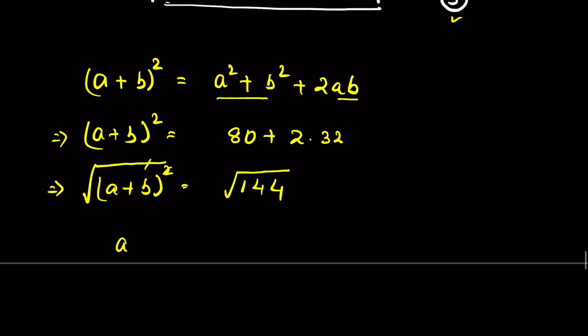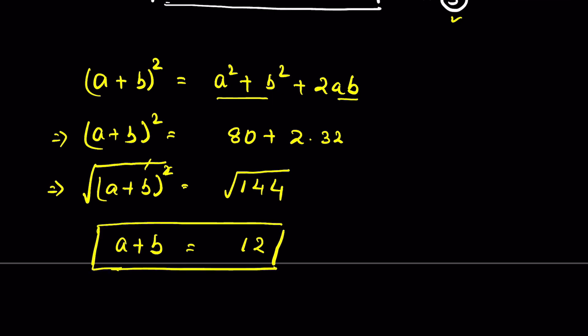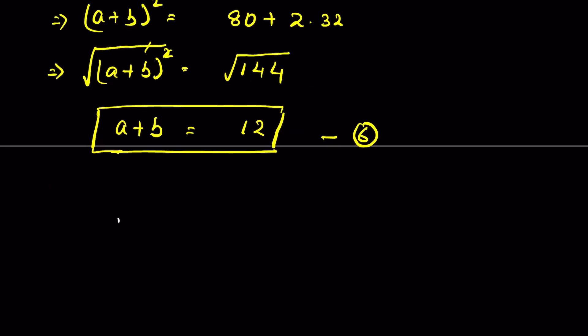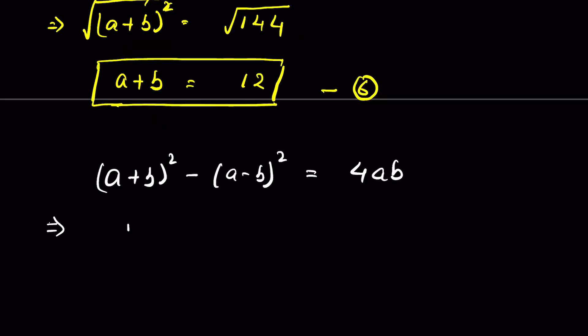Since a and b are positive integers, a+b must be positive, so a+b equals 12. Let this be equation 6. Now using the identity (a+b)² minus (a-b)² equals 4ab: substituting, 12² minus (a-b)² equals 4 times 32.